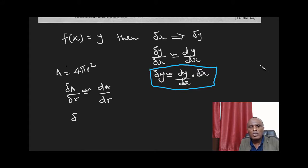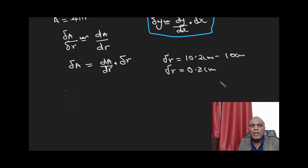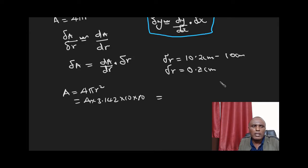The small change in the area is therefore approximately dA over dr multiplied by the small change in the radius. The small change in the radius is equal to 10.2 minus 10, which gives 0.2 centimeters. The surface area at r = 10 is A = 4π(10)² = 4 × 3.142 × 10 × 10 = 1256.8 cm².